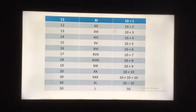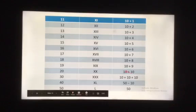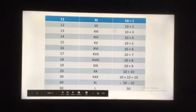Now, for writing 20, we split the 10s. 10 plus 10, we get 2 times X. 30 is written as 3 times X. Since we cannot use X 4 times, we subtract 10 from 50 and write it as XL. So this is how we write Roman numbers.